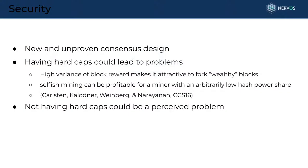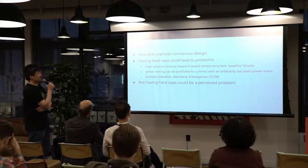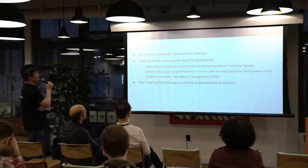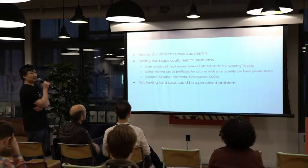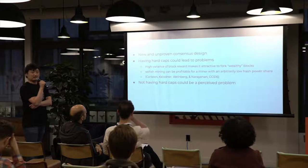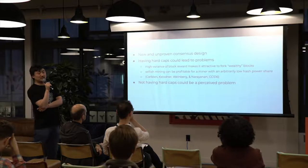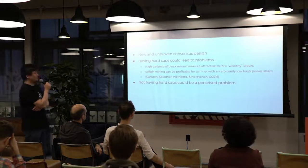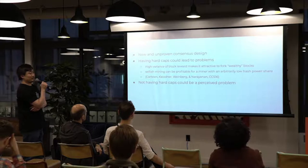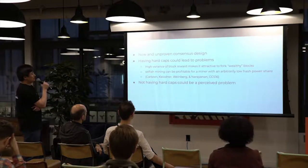We looked at all the different projects and identified key problems. First, we examined security. A lot of crypto-economics designs facilitate the consensus process — giving incentives for participants in the consensus process to reach agreement. But there are a lot of new and unproven consensus designs, so this is where people spend a lot of time.